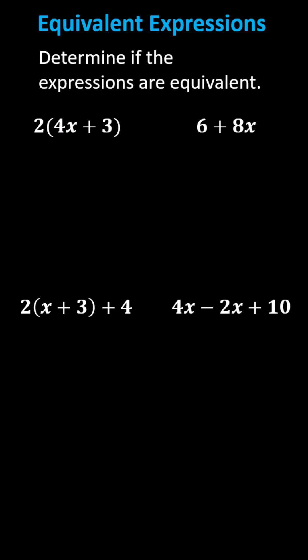Let's clear the parentheses from the expression on the left by distributing the 2, which gives us 2 times 4x plus 2 times 3. Again, 2 times 4x plus 2 times 3.